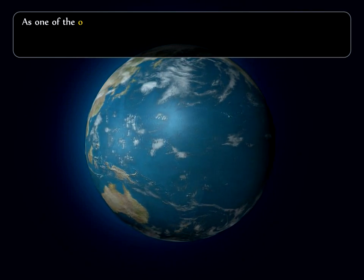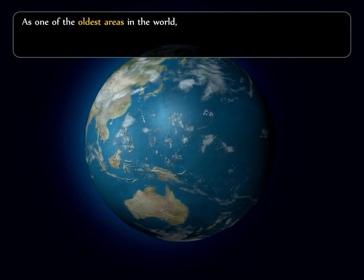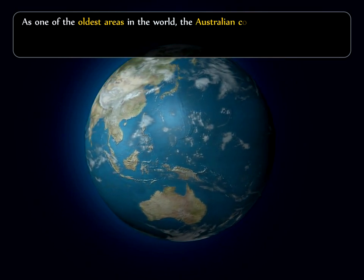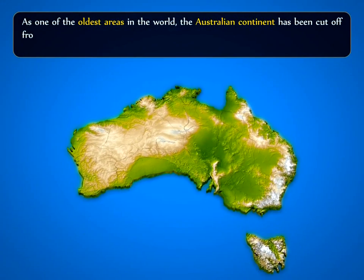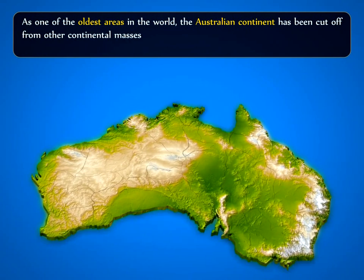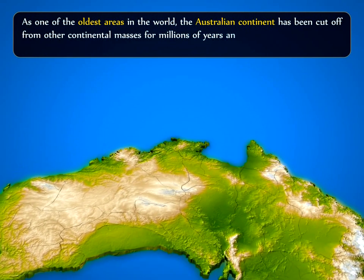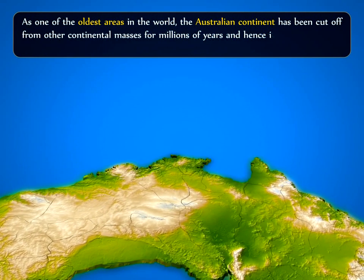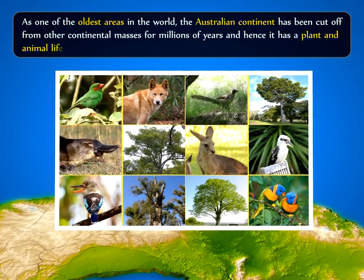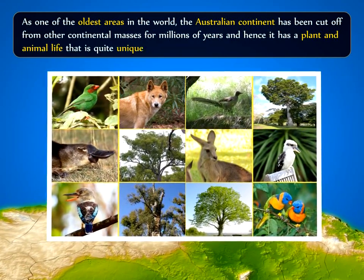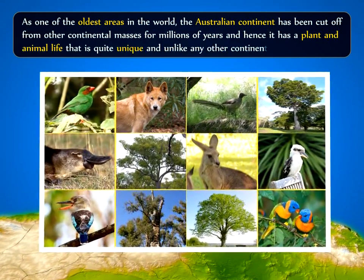As one of the oldest areas in the world, the Australian continent has been cut off from the other continental masses for millions of years, and hence it has a plant and animal life that is quite unique and unlike any other continent.